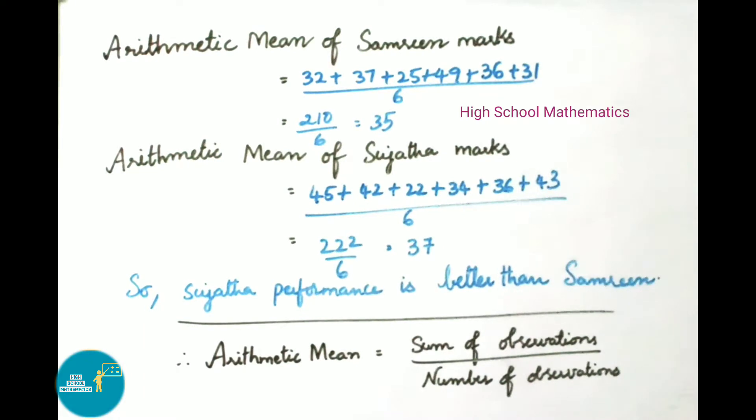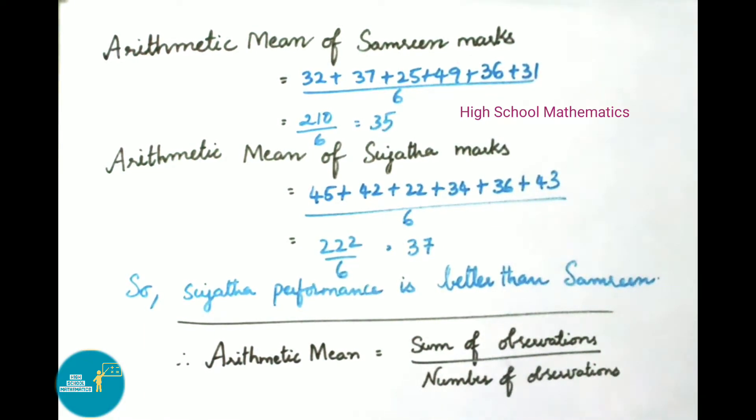Therefore, arithmetic mean = sum of observations divided by number of observations.